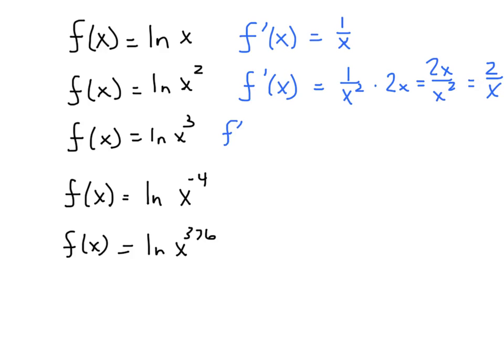Let's see what happens with x cubed. The derivative is 1 over x cubed times the derivative of x cubed is 3x squared, which is going to be 3x squared over x cubed. Look at what happens again. We get 3 over x.